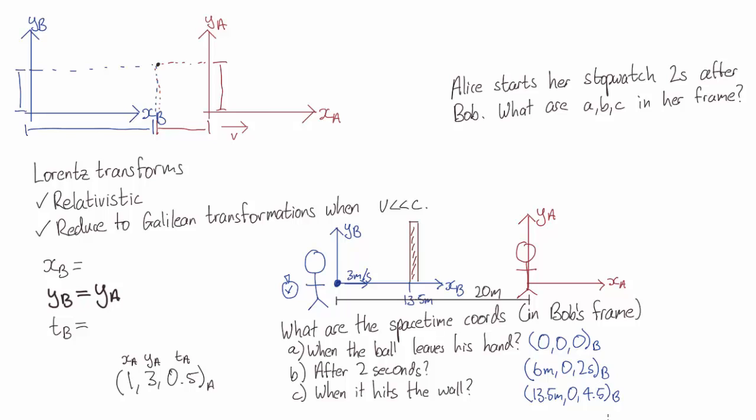What about in Alice's frame? The ball leaving Bob's hand happens 20 meters behind Alice's origin, so the x-coordinate of that is minus 20. The y-coordinate is 0, and this happens 2 seconds before Alice starts timing. So in Alice's t-axis, the time coordinate is minus 2 seconds.